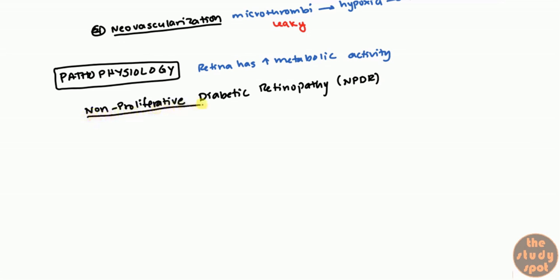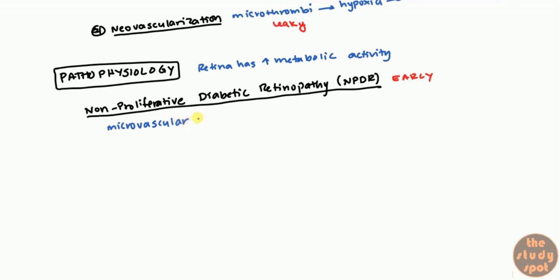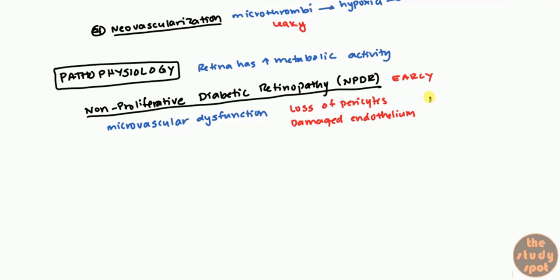Neovascularization is what characterizes proliferative diabetic retinopathy, with new vessel formation. NPDR is the early stage of diabetic retinopathy. What happens here? You have microvascular dysfunction, and for all four reasons mentioned earlier, this leads to loss of pericytes and damages the endothelium. Because of this damage to the vessels, you get something called microaneurysms, which you can actually see on a fundoscope.